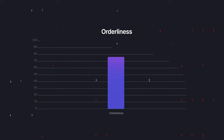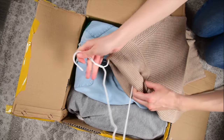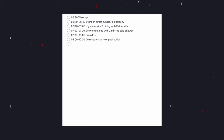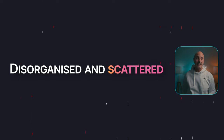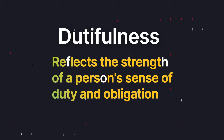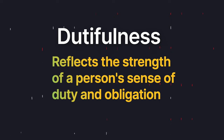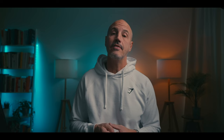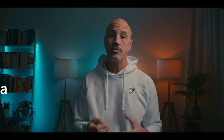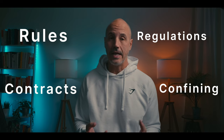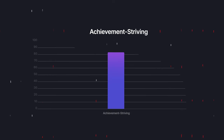People with high scores on orderliness are well organized — they like to live according to routines and schedules, keep lists and make plans. Low scorers tend to be disorganized and scattered. Dutifulness reflects the strength of a person's sense of duty and obligation. Those who score high have a strong sense of moral obligation, while low scorers find contracts, rules, and regulations confining and are likely to be seen as unreliable or even irresponsible.